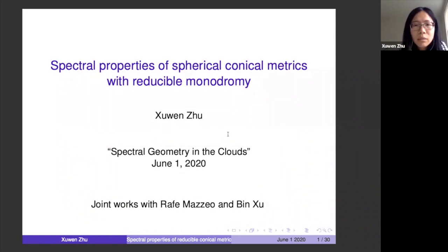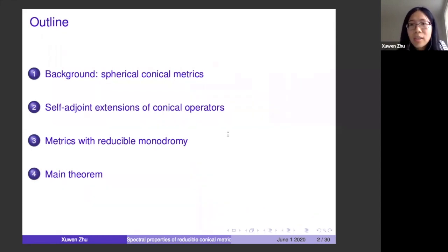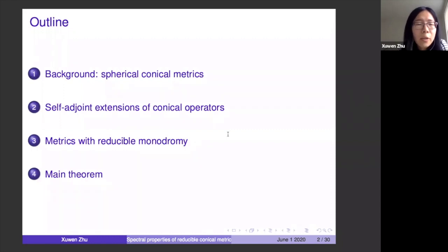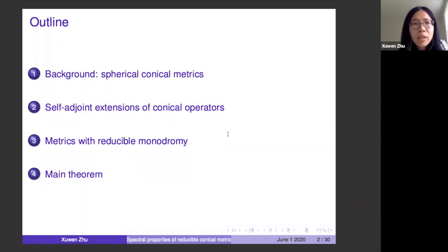My plan today is to first talk about the differential geometry background, which is spherical conical metrics — mentioned last time by Yosef, but this will be a more general spherical conical metric. Then I'll talk about the analysis side, which is the self-adjoint extensions, because that's what we use heavily in our work. Then there is a more geometric or complex analysis part, which is metrics with reducible monodromy. And finally I'll talk about the main theorem, relating the analysis and the geometry — a spectral criterion for identifying the monodromy.